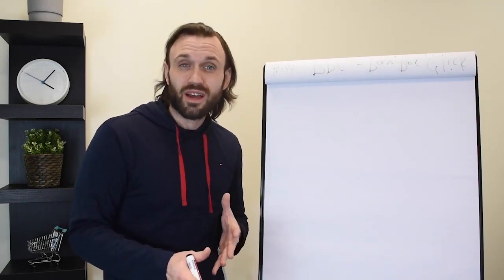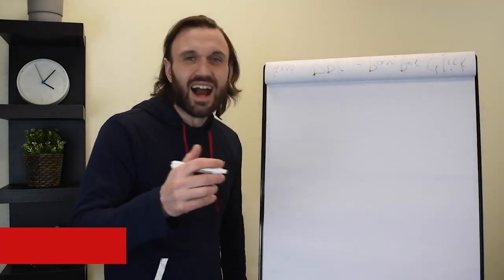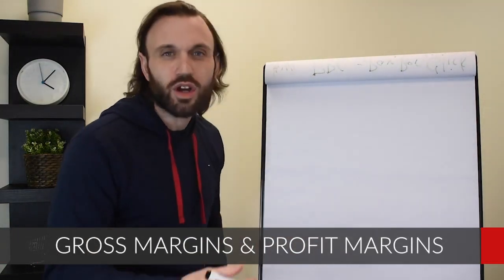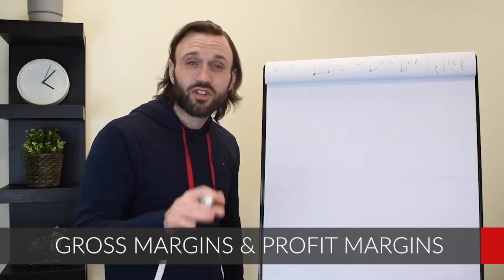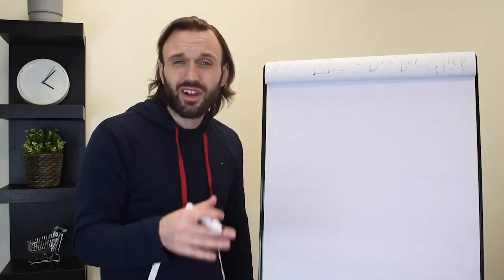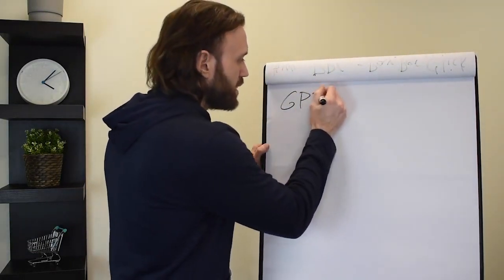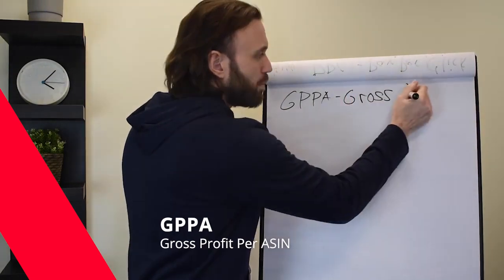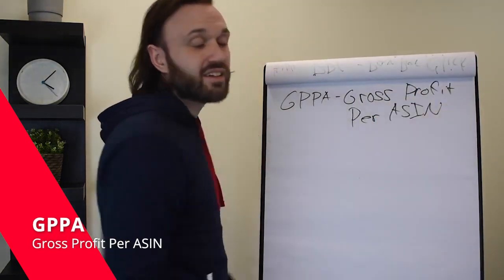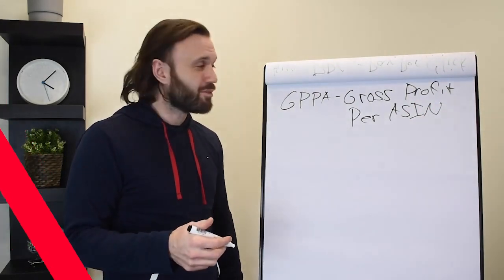The first thing you're going to want to know for your company is obviously margins. When I'm talking about margins, I'm talking about gross margins and profit margins. The first number we're going to analyze is your GPPA. That's your gross profit per ASIN, and it's very simple to get your gross profit per ASIN.